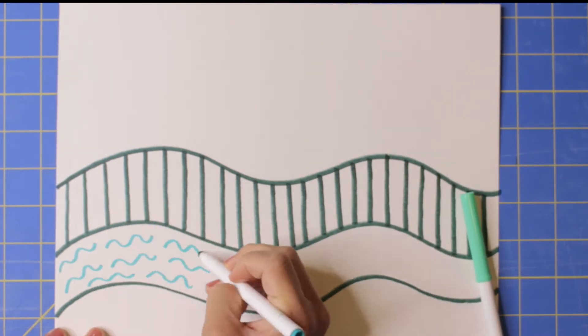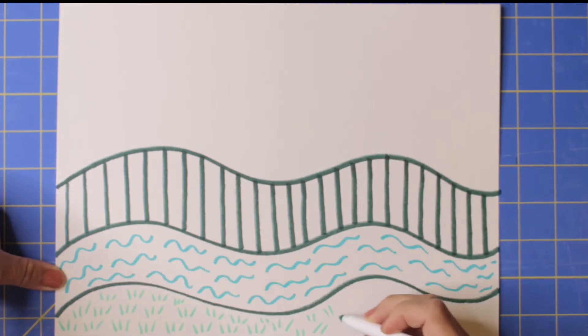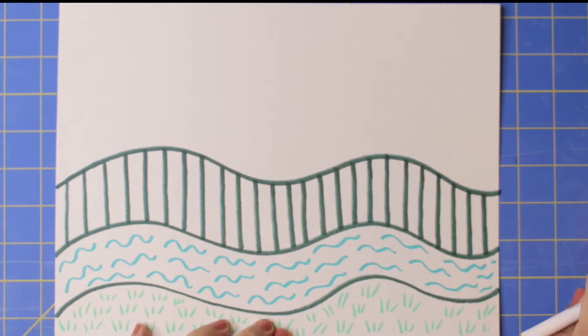I'm going to be drawing a landscape or a picture of a place using line. Notice the different types of line I'm using in my artwork.